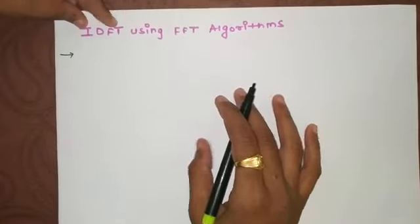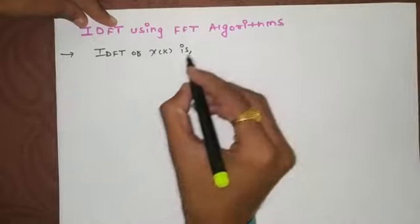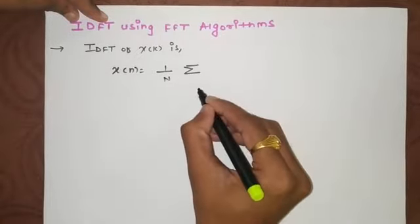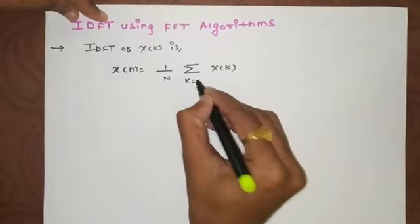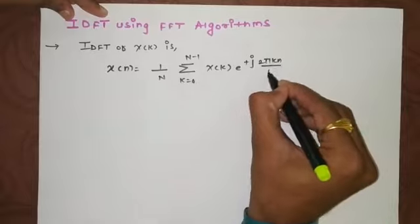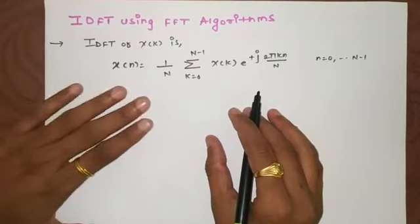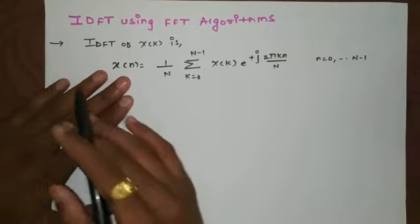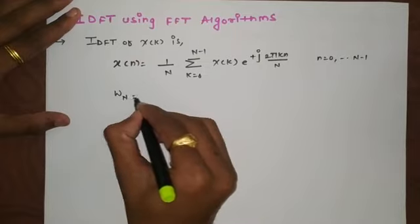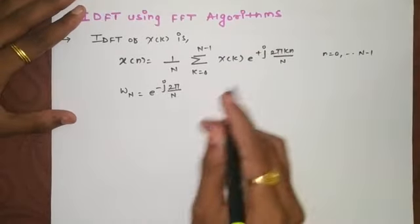As you know, the IDFT of X(k) is given by the equation: x(n) equals 1 over N, summation from 0 to N minus 1 of X(k) times e raised to plus j 2 pi k n over N, where the values of n are from 0 to N minus 1. To implement this using FFT algorithms — DIT or DIF — we need twiddle factors. You know that omega_N equals e raised to minus j 2 pi over N.